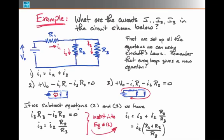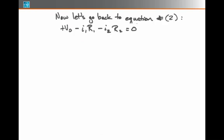We now have a second equation which we can substitute into one of our other equations. If we go back to equation 2, equation 2 states plus V0 minus I1 R1 minus I2 R2 equals 0. I'm going to substitute in for I1, the expression we just found involving I2, and I have to multiply that I1 by the R1 of my equation number 2.